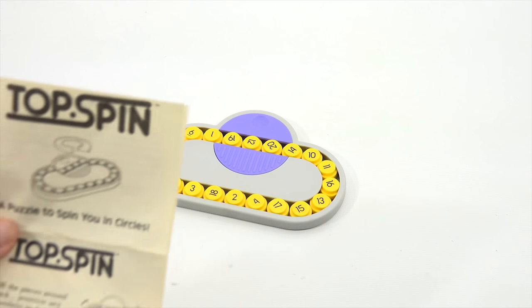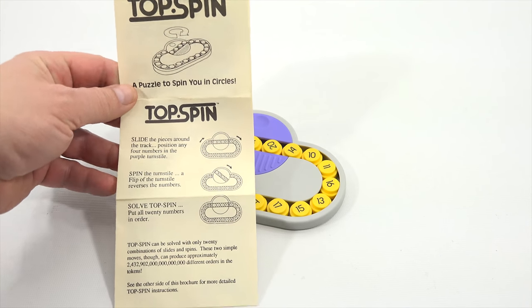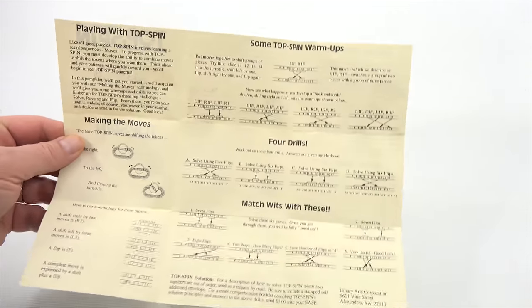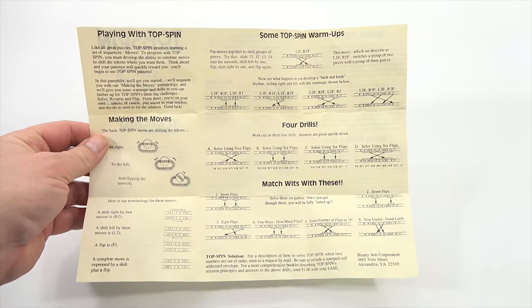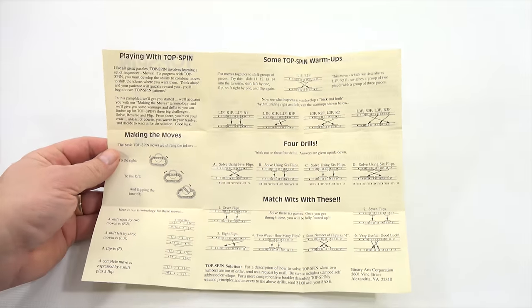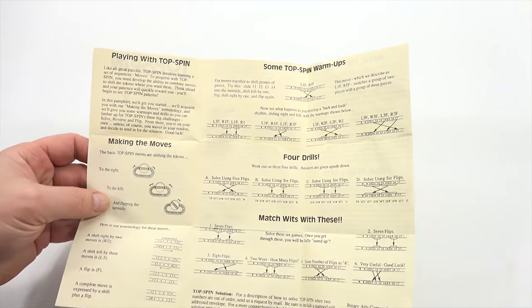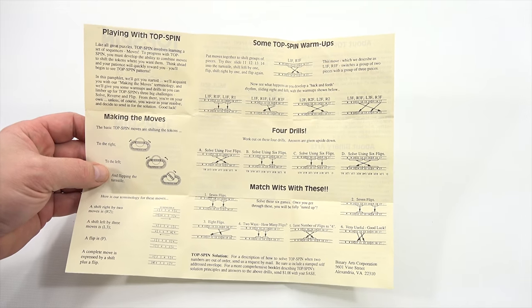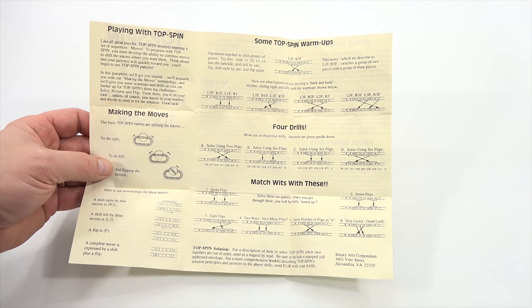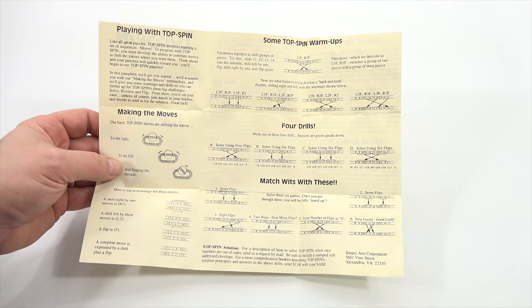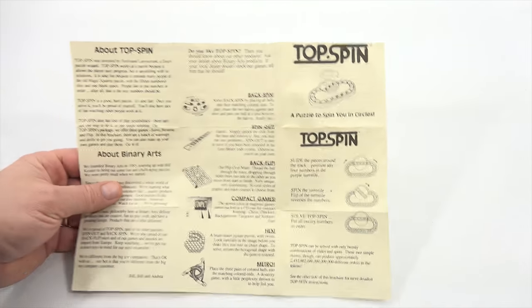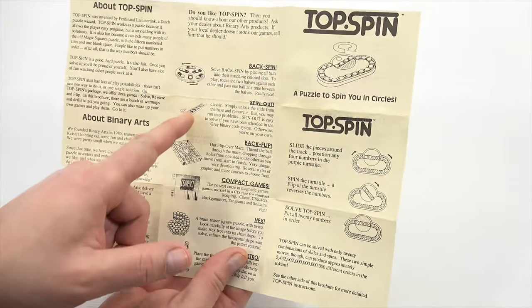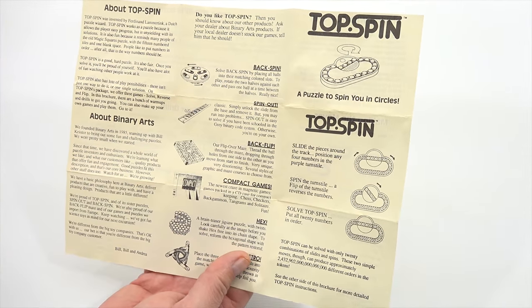This, I looked at and it looks rather challenging in a way. Look at this. All the different turns and moves. So, making the moves. The right, the left, and flipping the turnstile. So, that kind of guides you. And then, there's some warmups, some drills, match wits with these. Solve those six games. And then, this is kind of neat. It shows you other games. And I just realized I have spin out. I showed that one on a video.